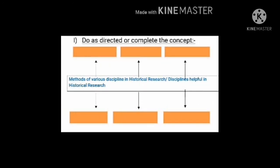Question number one is: complete the concept — methods of various disciplines helpful in historical research. In the lesson we have already learned how historical research is done by various experts. We have to write the experts needed in various disciplines who are helpful in doing historical research. The first one is Archaeology — the scientific method of studying materials found from olden times.